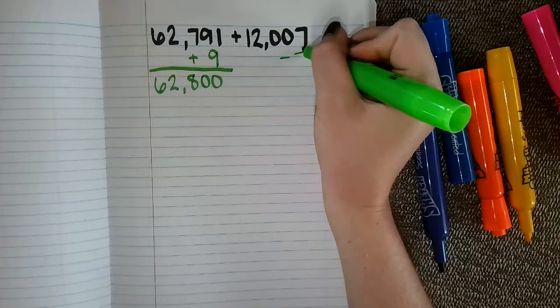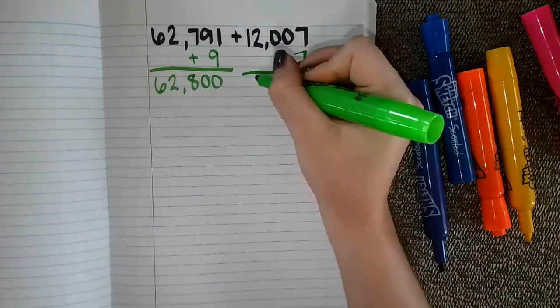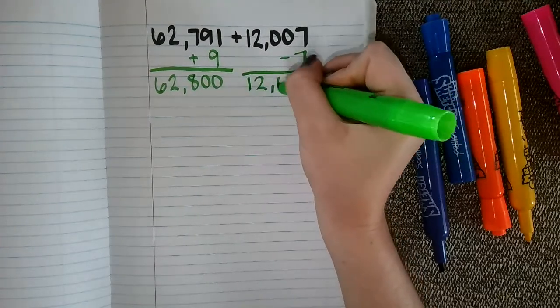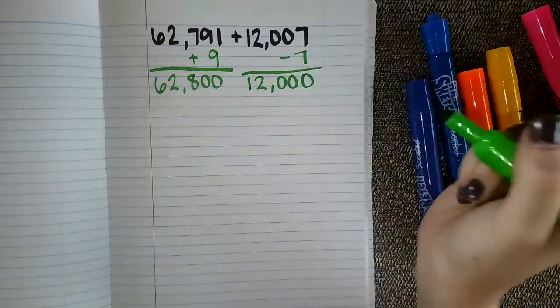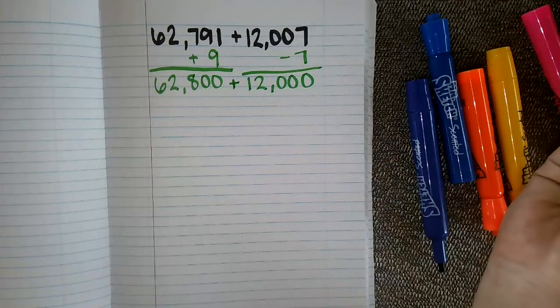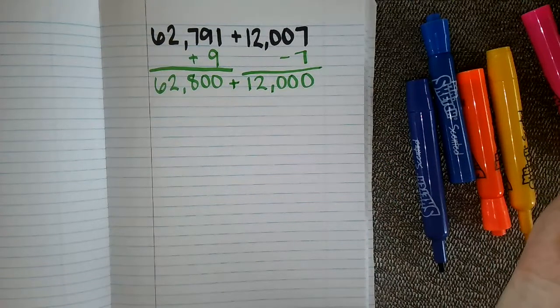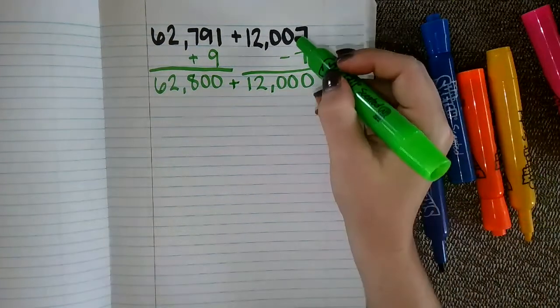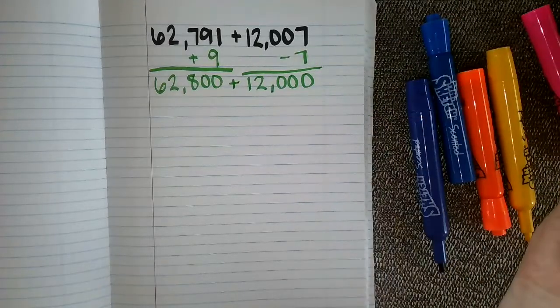But I'm actually going to subtract 7 to make this just an even 12,000 because in my opinion, putting these two numbers together, especially if I was doing this in my head, would be a lot easier than if I had numbers over here in the tens and the ones place.